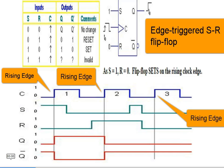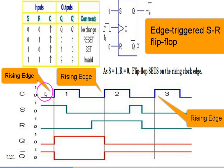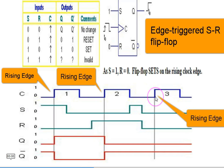I'm going to discuss the clocked RS flip-flop, which is edge-triggered. If you have a clock pulse going up and down, you notice this edge is a positive-going edge, this edge is negative-going — rising edge, falling edge, rising edge, falling edge. So this is a clock pulse.